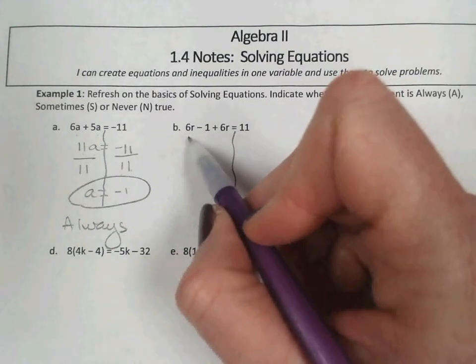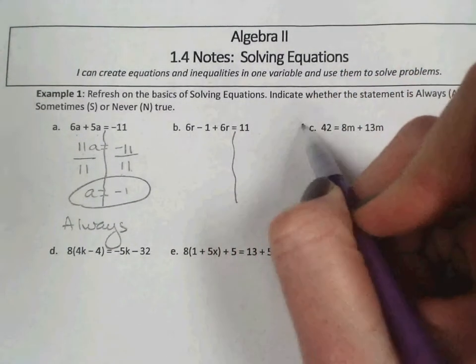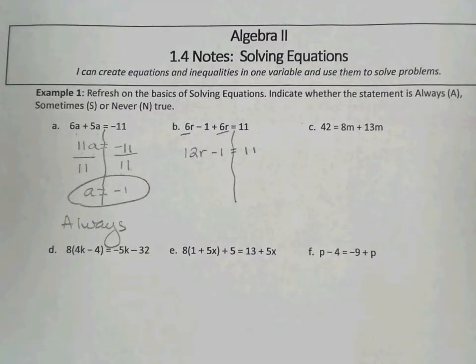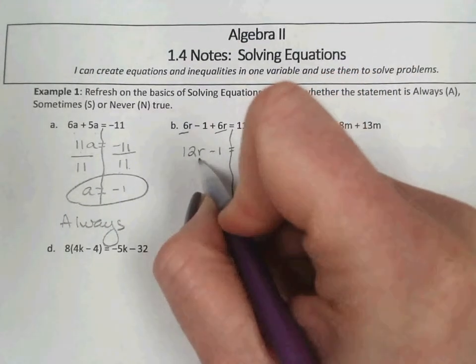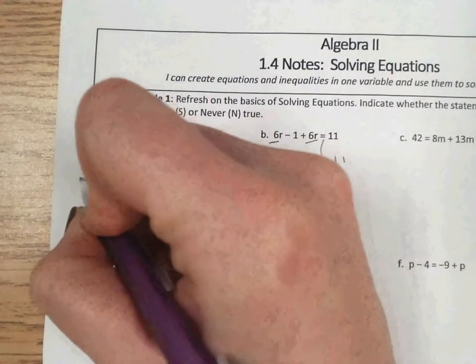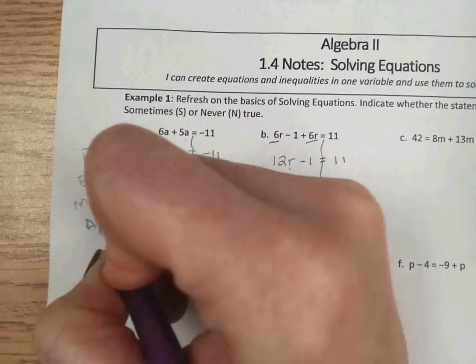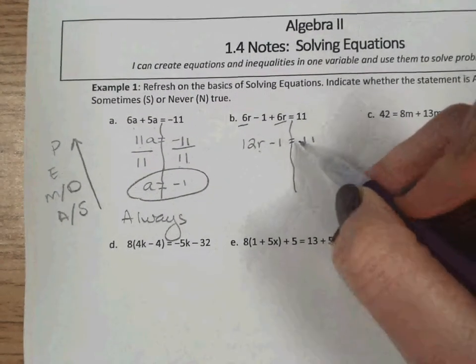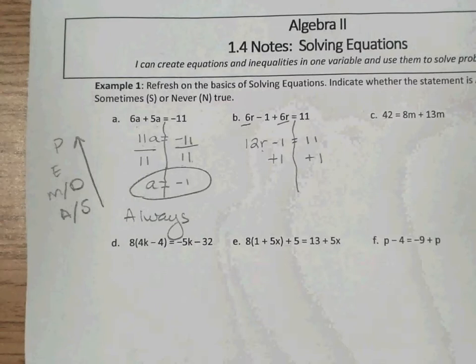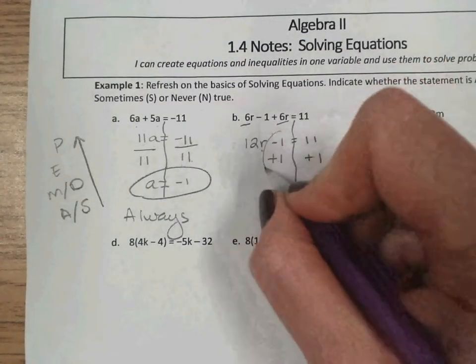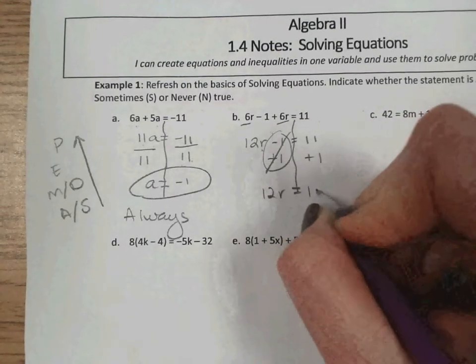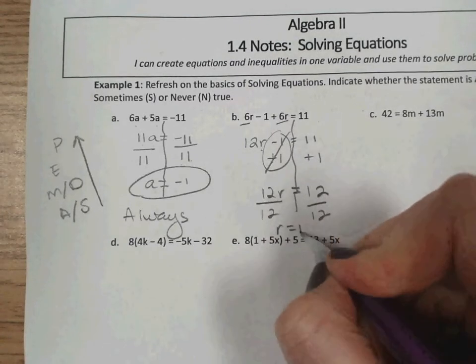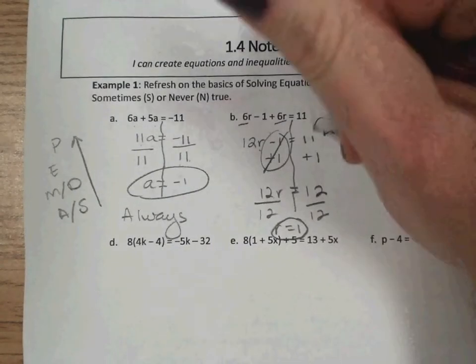The next question, we have a 6r and a 6r on the same side. Again, there's only variables on one side. So we'll start by combining like terms. 6r and 6r is 12r. To isolate the variable, we do PEMDAS in reverse. PEMDAS is our order of operations. When we're solving equations, we go in reverse. So we would undo addition and subtraction first. We'll add 1 to both sides. Makes a zero pair. So 12r equals 12. And then divide both sides by 12. So r equals 1. Again, this will always be true.